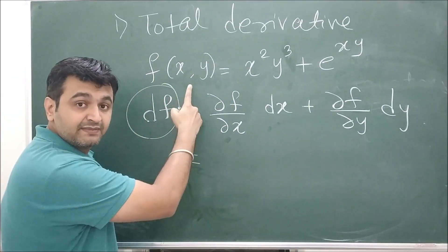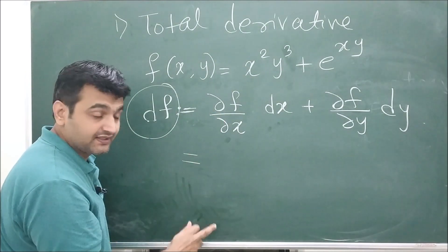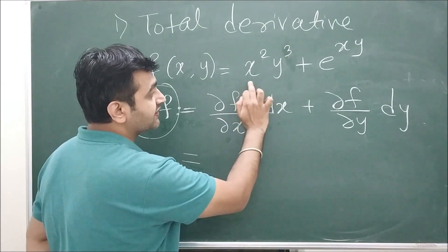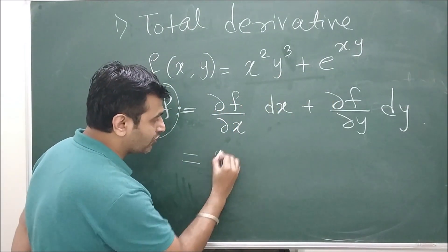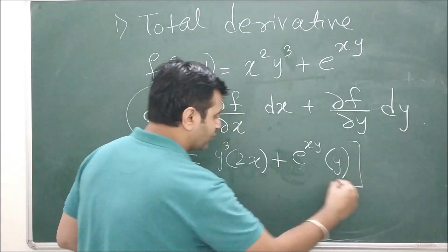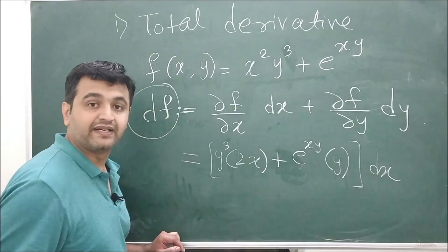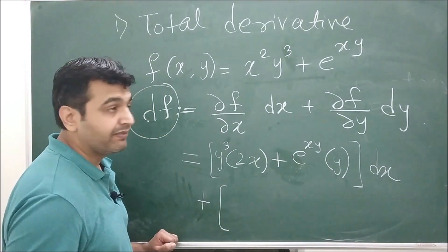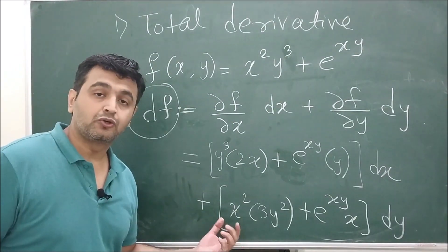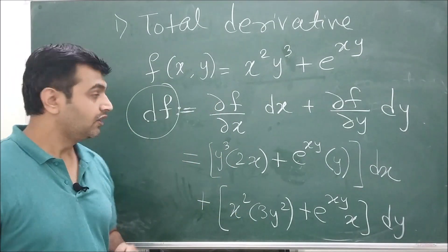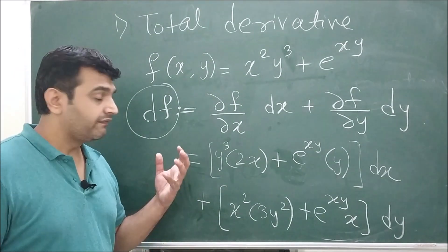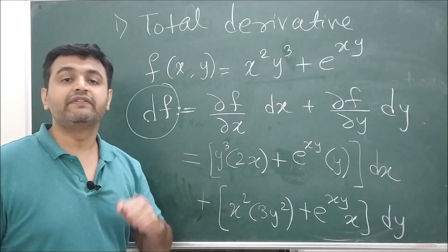For this function, when differentiating with respect to x we keep y³ as constant, so the derivative of x² is 2x — giving the term 2xy³ dx. Then for the partial with respect to y, we treat x as constant. So df = (2xy³ + ye^(xy)) dx + (3x²y² + xe^(xy)) dy. This is the total derivative of the function. We will study this in detail when we cover multivariable calculus.